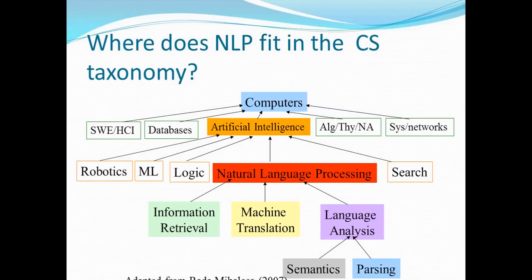Language processing touches on areas of information retrieval, machine translation, and other types of language analysis and generation. A large part of what we'll talk about is semantics and syntax — the difference between them, how we sit at the interface of semantics and syntax, what it buys us, and what sort of processing we can do after that.